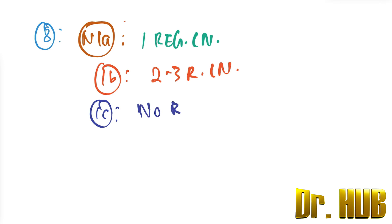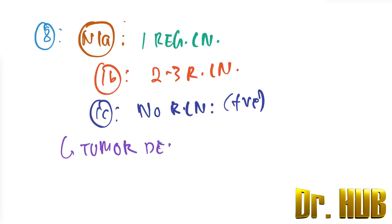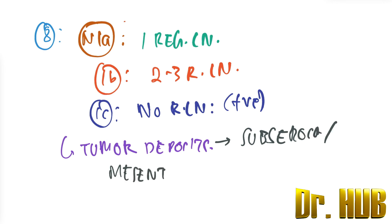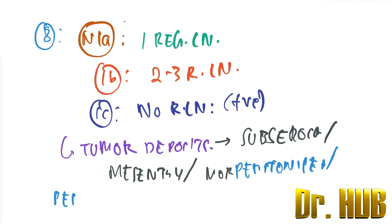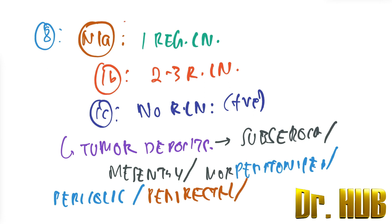N1C means no regional lymph nodes are positive, but tumor deposits are present. Tumor deposits are present in the subserosa, mesentery, or non-peritonealized pericolic, perirectal, or mesorectal tissues.